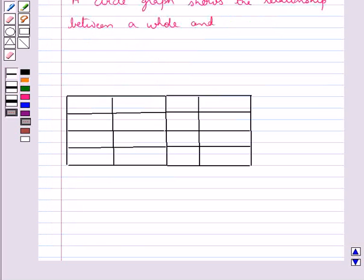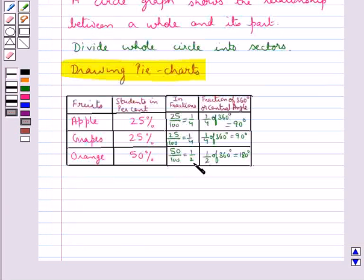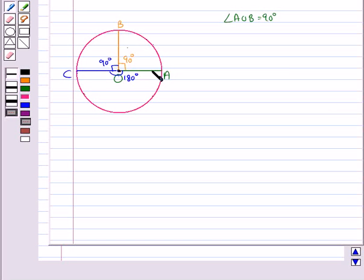In the same way, we will mark the other sectors. We make an angle of 90 degrees and 180 degrees for the sectors of grapes and orange. This portion shows the apple, this portion shows the grapes, and this portion shows the orange. This is how we draw a pie chart for any given data.